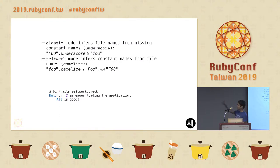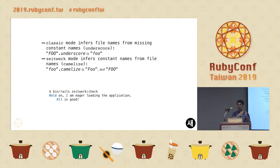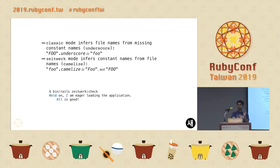Basically, if you have your whole structure right now and you upgrade to Rails 6, everything should work as it is. There are no changes to the project structure. In classic mode, the inference of files was done from the constant names. For example, if you use a constant that hasn't been loaded yet, it tries to find the file name from the load path and identify the constant. It uses underscore to do that — if you try to load Foo, it will underscore it and try to find foo.rb.